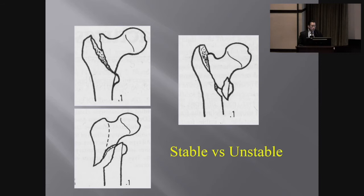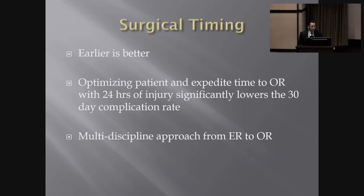Stable versus unstable — we're going to get into that, but it's defined basically on the integrity of the lesser trochanter and calcar, where there's a posterior medial buttress which is a strong portion of the bone you need to address for stability. Surgical timing has come much to the forefront. We need to get these patients, particularly elderly patients, into the OR early. There's been a lot of research done, and the optimal time is 24 hours — try to expedite them.